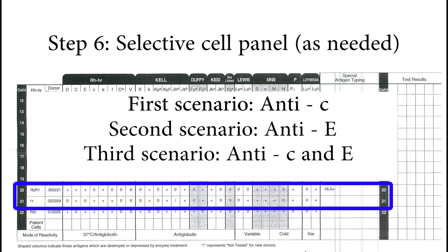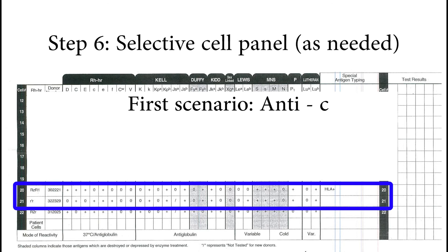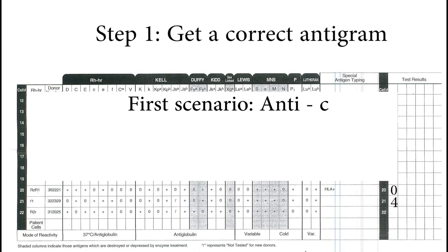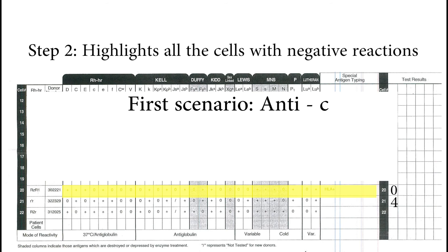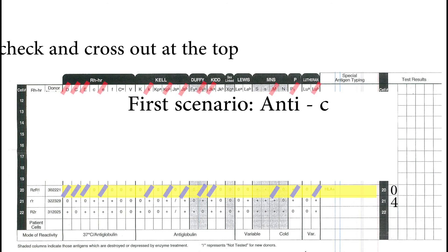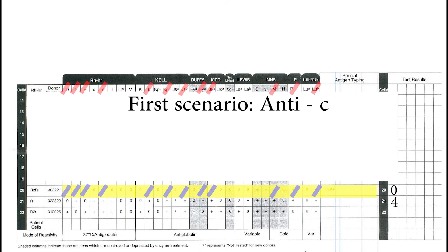There are a few possibilities: the patient can have just little c, just big E, or both, depending on the results of the selective cell panel. In the first scenario, the reactions show as 0 and 4+. Follow the same process — steps 1 through 4. You will see that big E is crossed out, meaning your patient has a little c antibody. We have positive reactions when little c antigen is present on the donor RBC, and big E is eliminated.